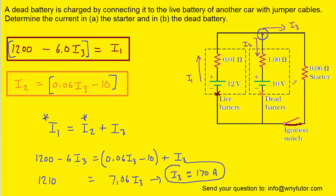Now, notice from the diagram that I3 was the current that's flowing through the starter. And so we've actually answered part A of the question by solving for I3.